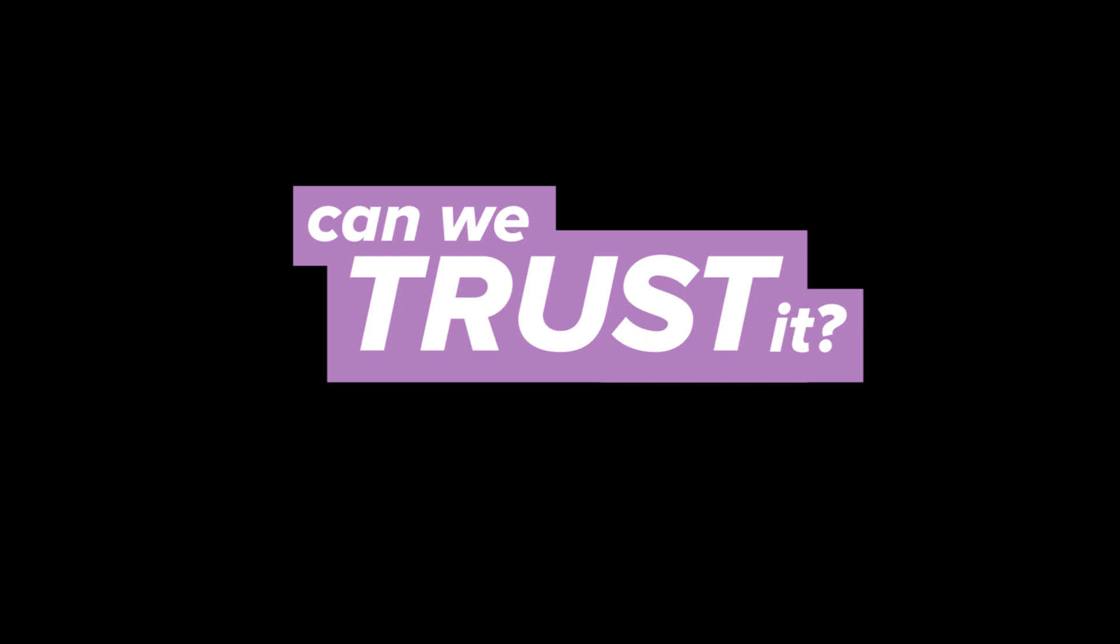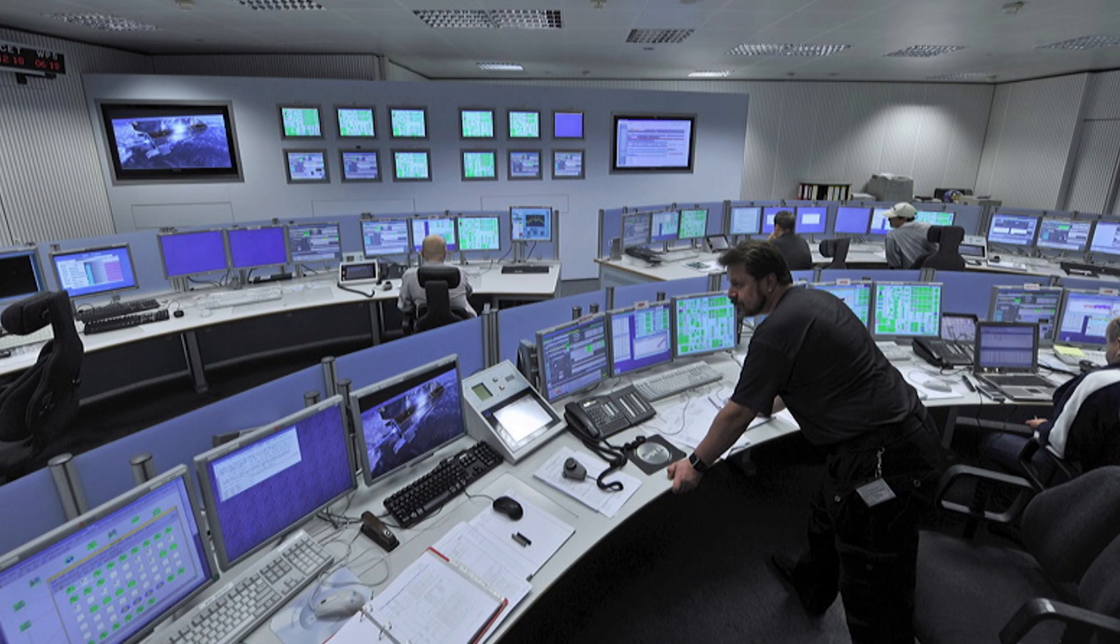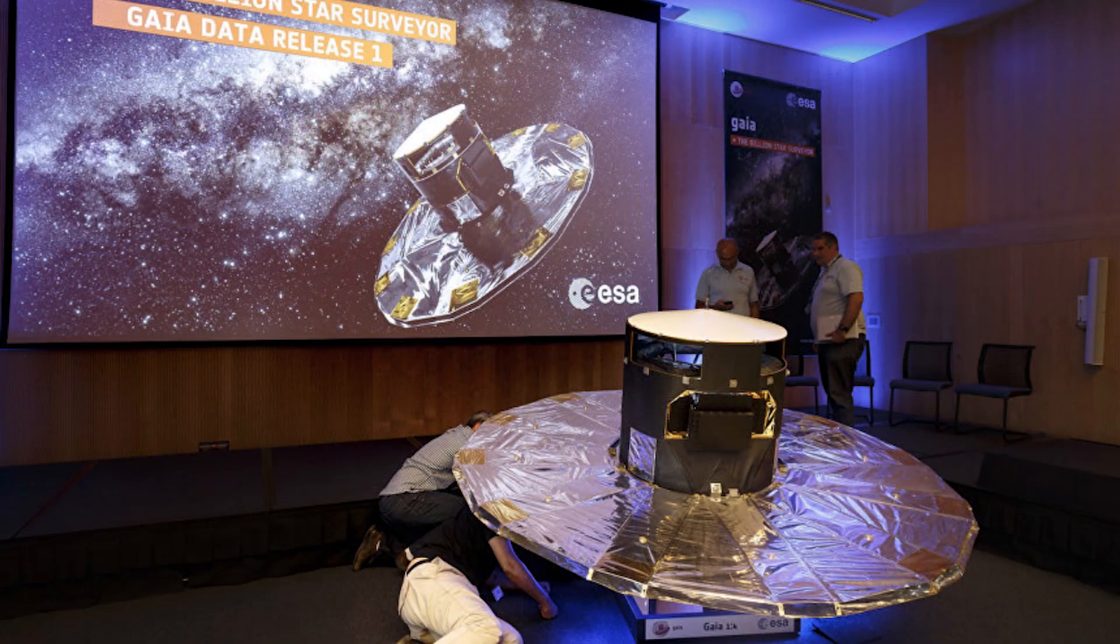If every little dot you see on the Gaia map is a star, every little dot on this Sloan map is a galaxy. Like most scientific findings, you've got to figure out if you can trust it. Gaia is certainly a reputable source created by the European Space Agency in 2013. They're basically the European NASA.